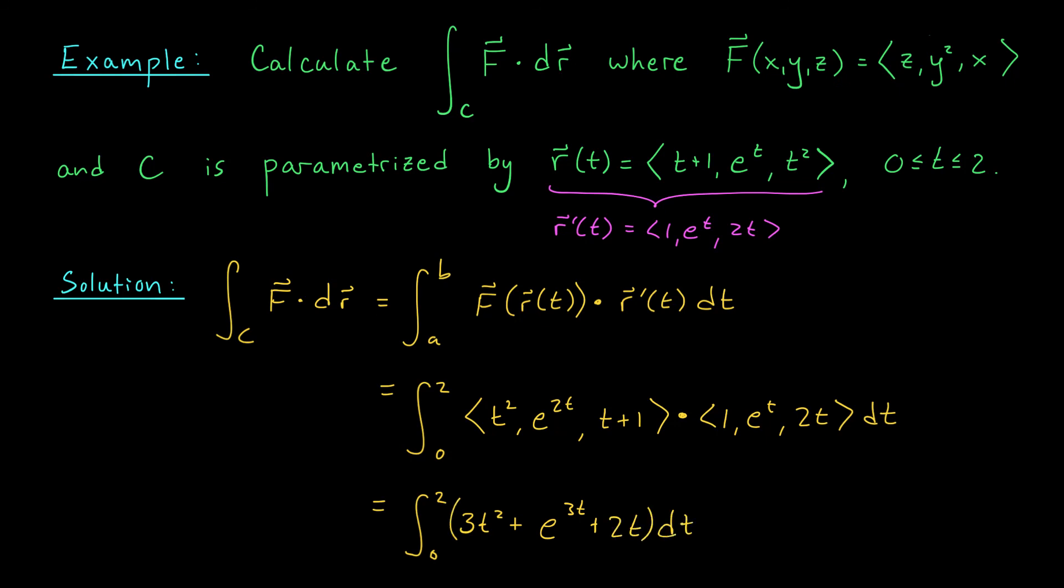An antiderivative is given by t³ + e^(3t)/3 + t². And we evaluate from 0 to 2. I'll let you verify that by plugging in these bounds and simplifying your expression, you should be left with (e^6 + 35)/3.